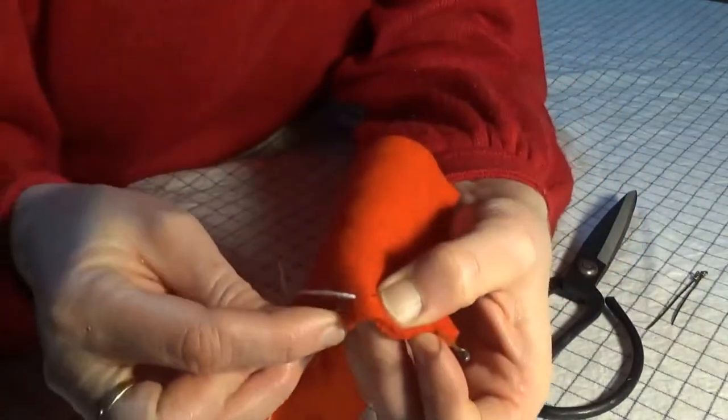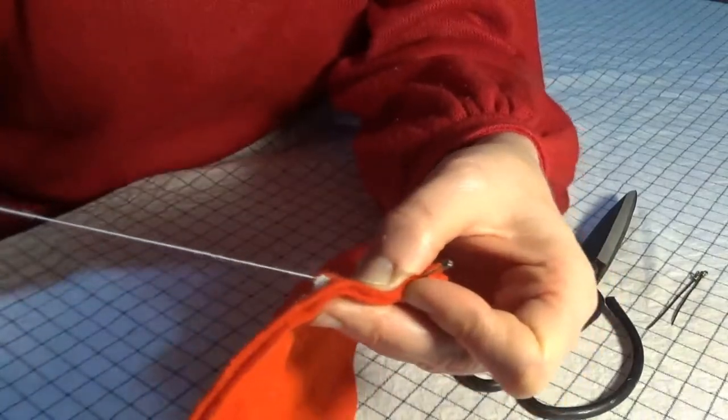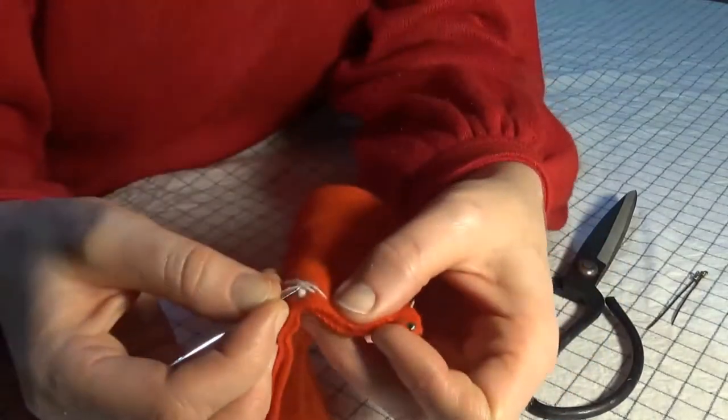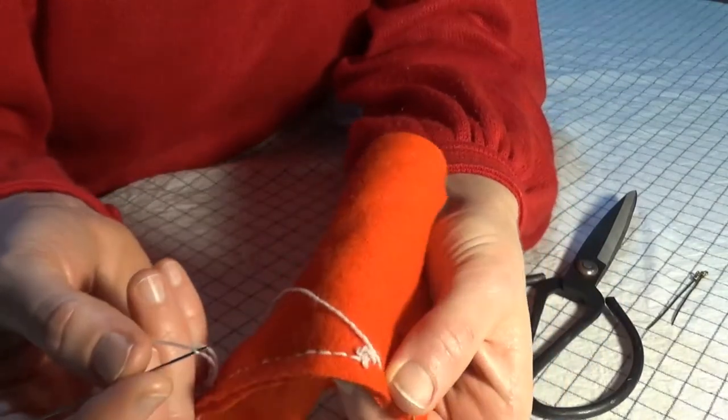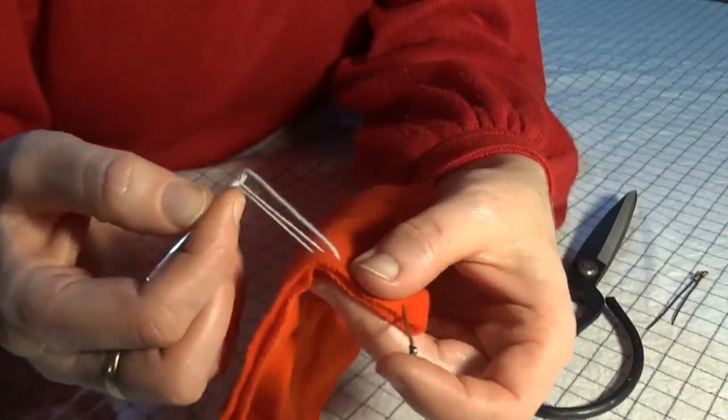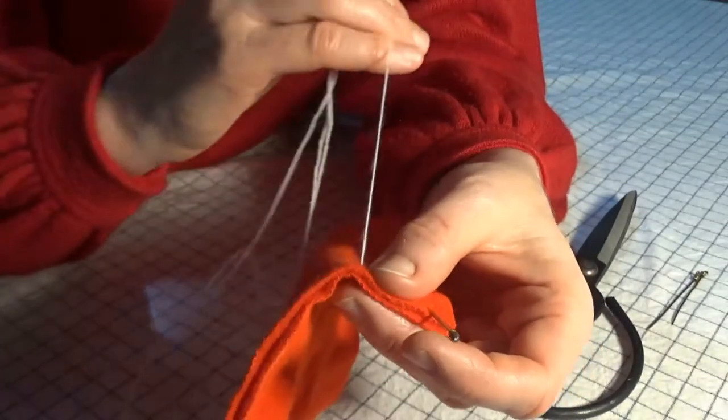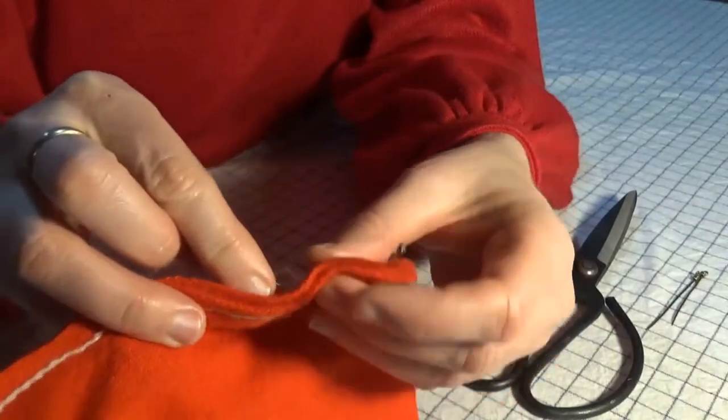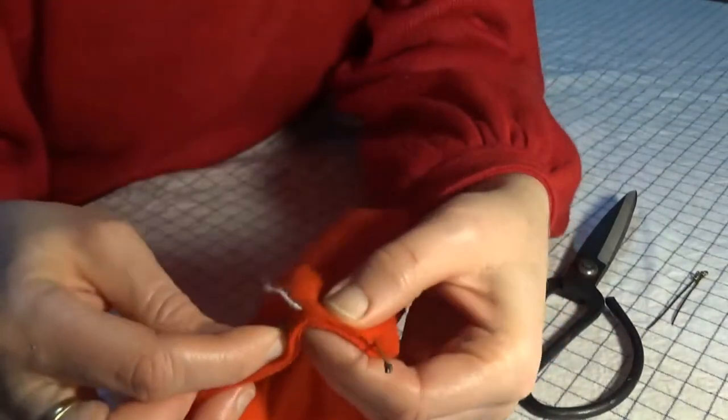As I stitch, you can see that the thread can tend to tangle due to it being so long. It's okay to just gently untangle the thread with your fingers or with the tip of your needle to free it before you continue stitching. Sometimes a reproduction medieval bone awl can be very handy for this sort of task.